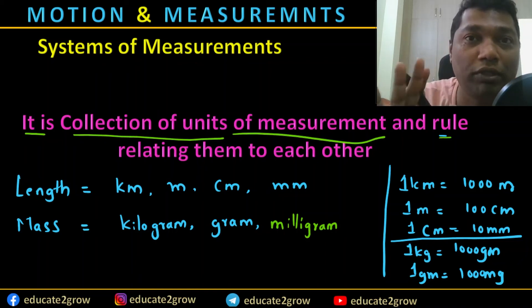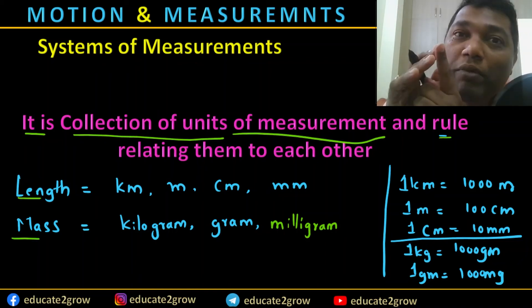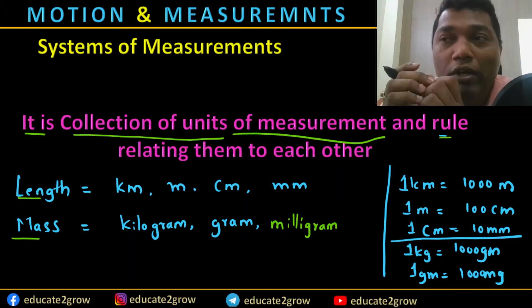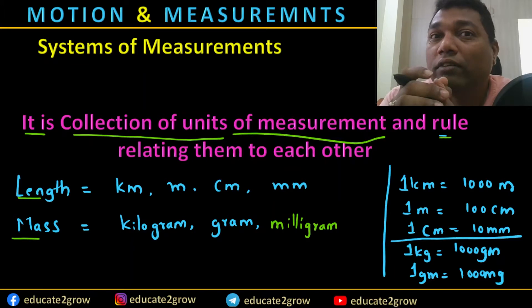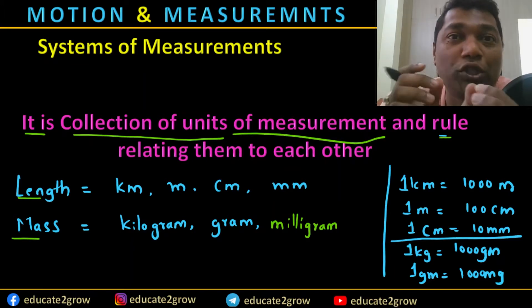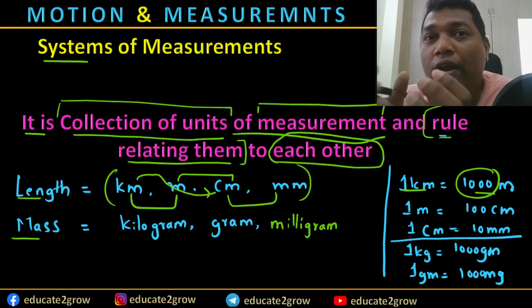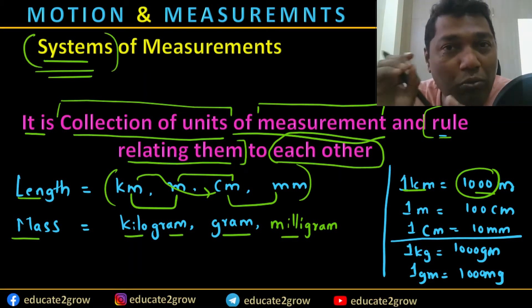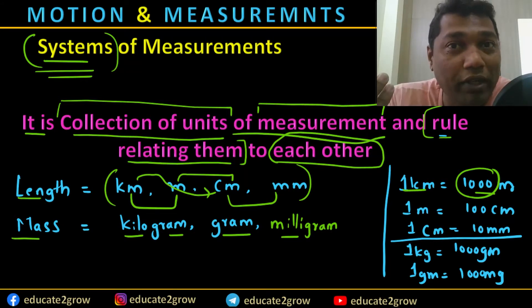A collection of units of measurement — what does this mean? The length can be expressed in different units. So why have these different units come into picture? That is a question. When were they implemented, who implemented them, and why? We should read a little bit of history.